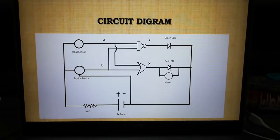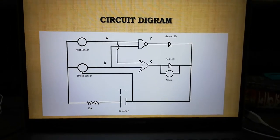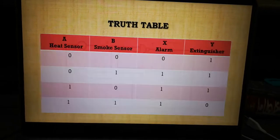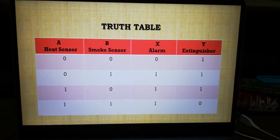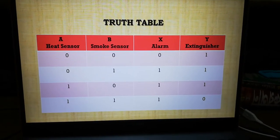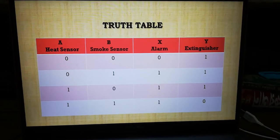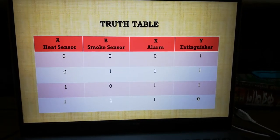Let's see the truth table. In this truth table there are two inputs and two outputs. When the heat sensor and smoke sensor are zero, then the output will be X equals zero and Y equals one.